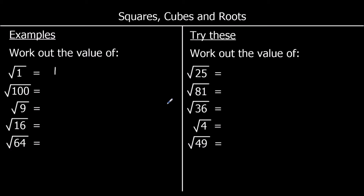The square root of 100: what number times itself makes 100? That is 10. Square root of 9: what number times itself makes 9? 3. What number times itself makes 16? The square root of 16 is 4. And what number times itself makes 64? The square root of 64 is 8.